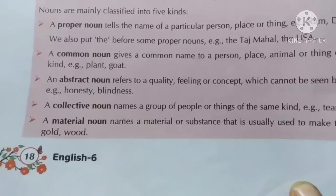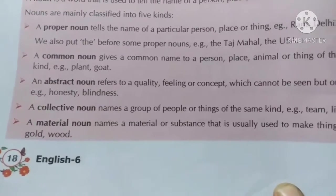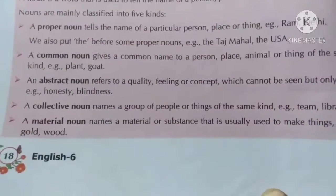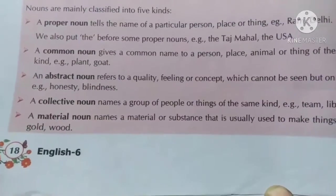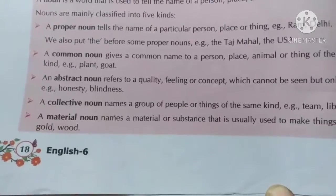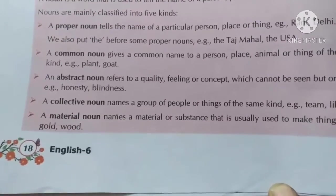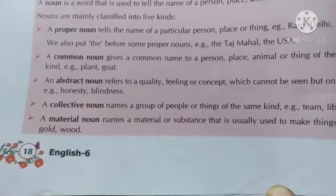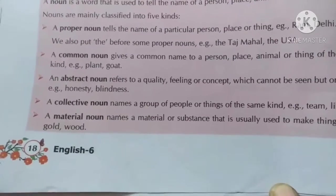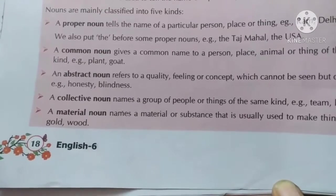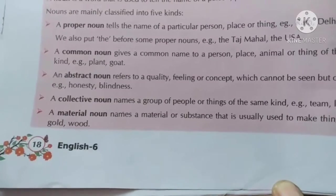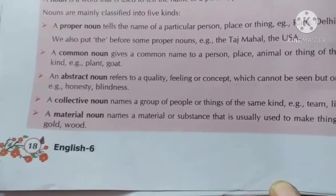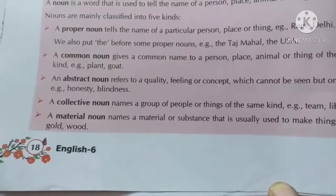After that we have material noun. Material noun means a material or substance that is usually used to make things. Example hai gold ya wood. Furniture is made up of good wood. Toh wood furniture se related hai, aur wo furniture ko describe kar raha hai ki wo kis se bana hua hai. Toh wood ho gaya humara material noun.